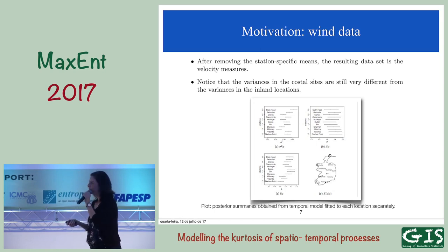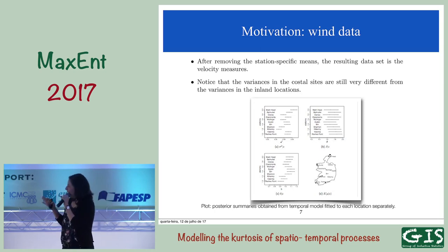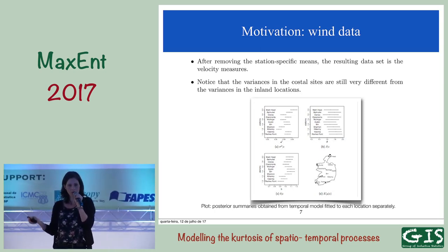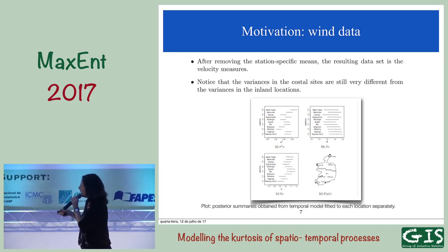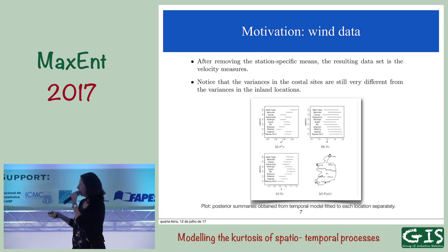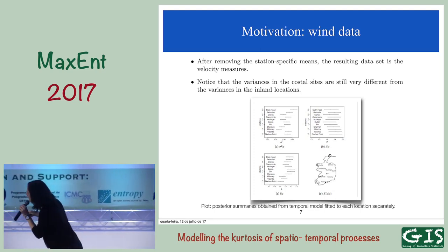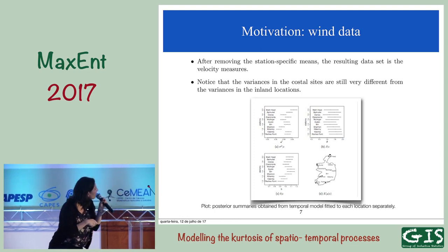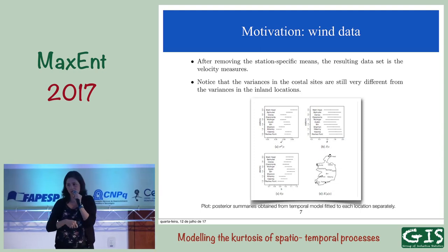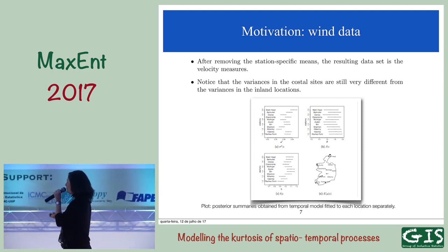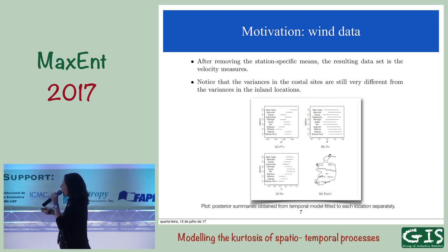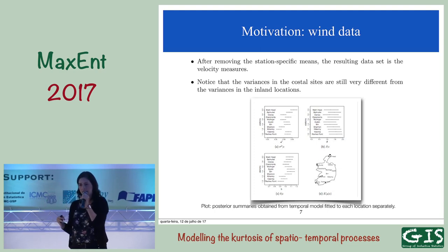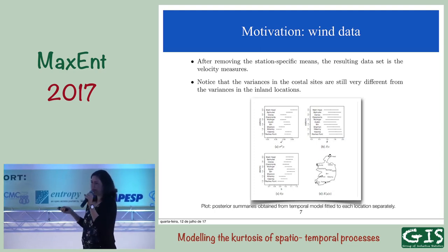But there are situations where Gaussianity shouldn't be assumed for all applications. With the wind data, I fitted a time series model for each location, estimated all the parameters — the variance, the range in time, the smoothness in time. As you can see, the variance is not the same for all stations. In coastal sites, variances differ from inland variances. This is very common.